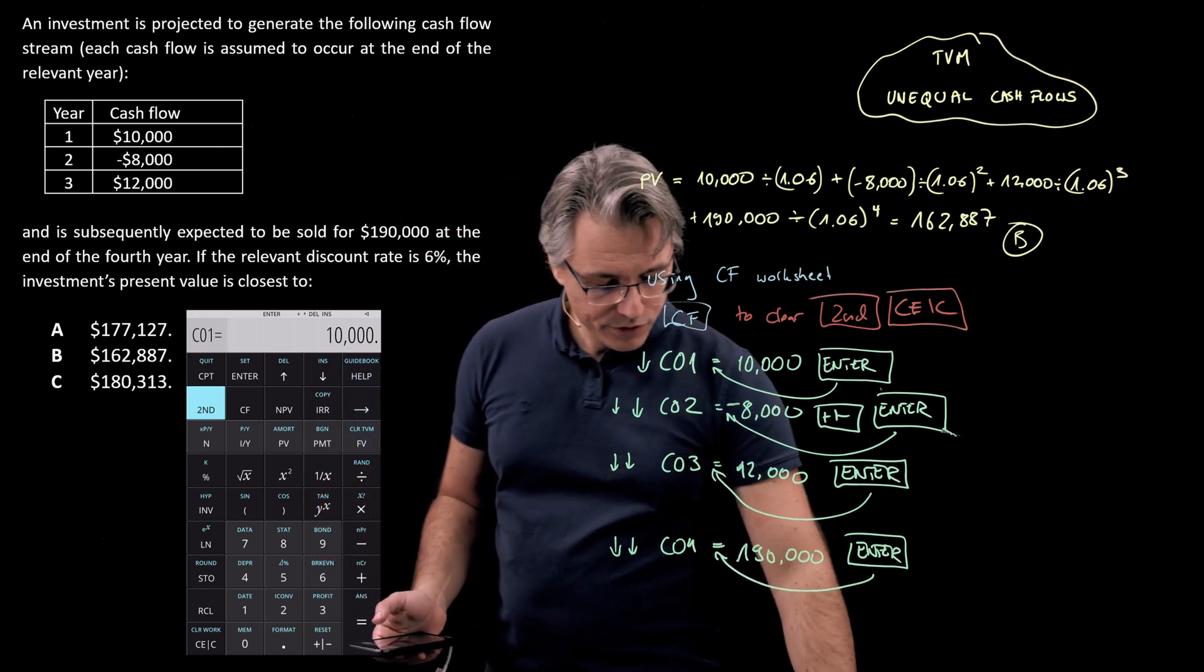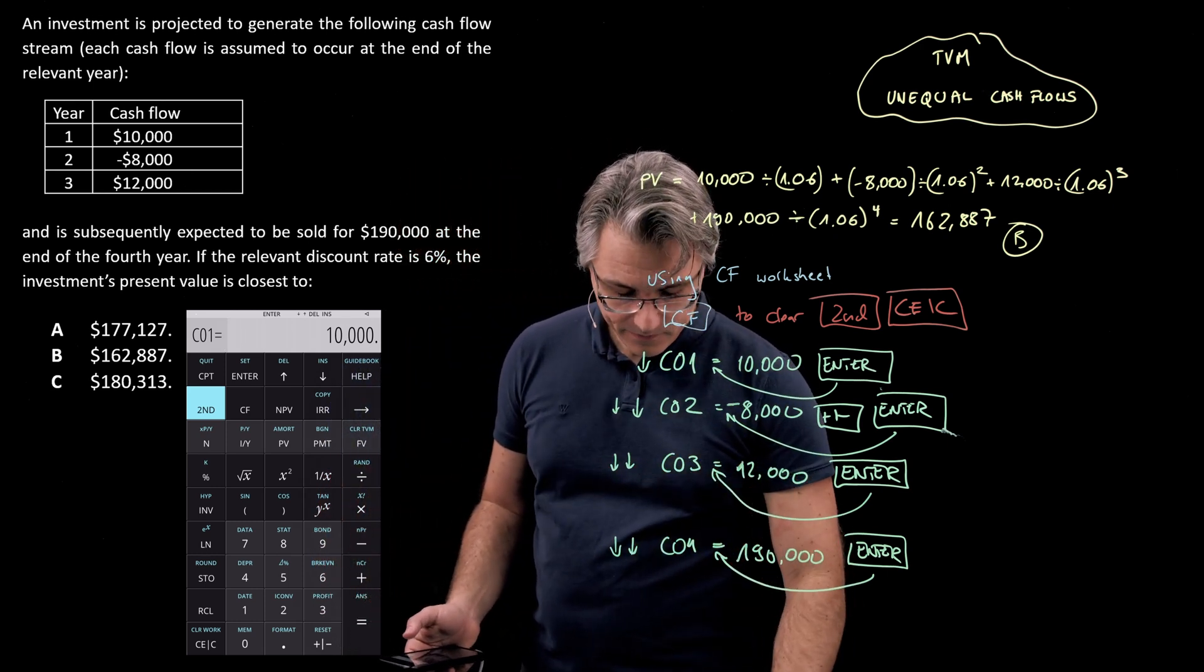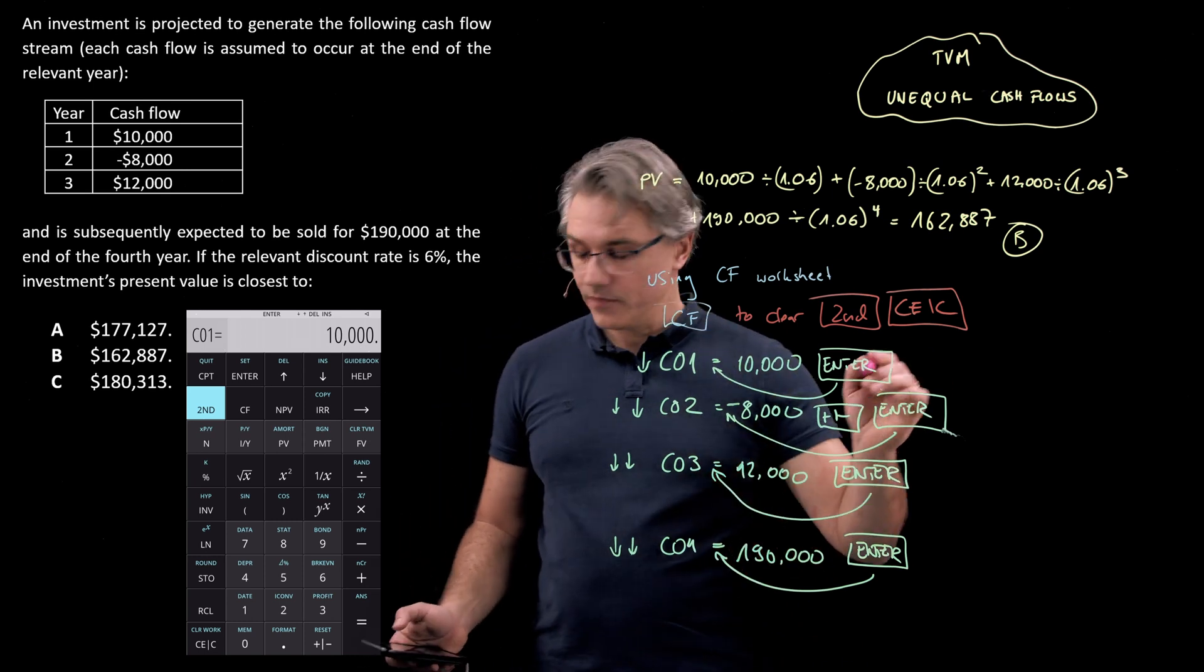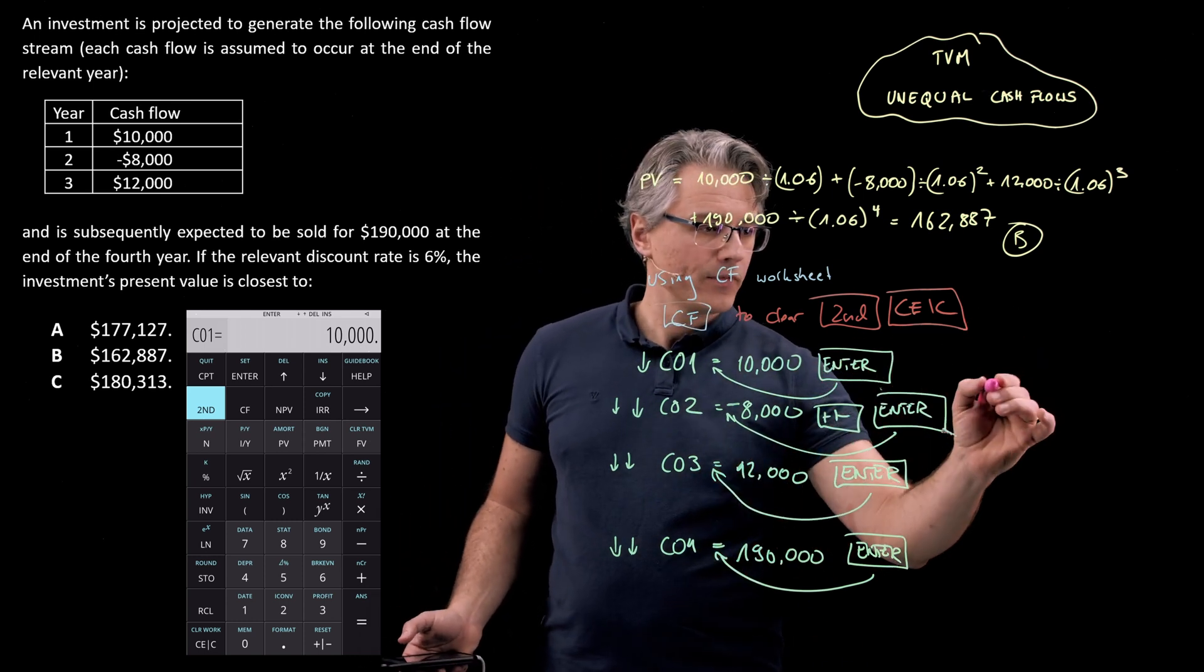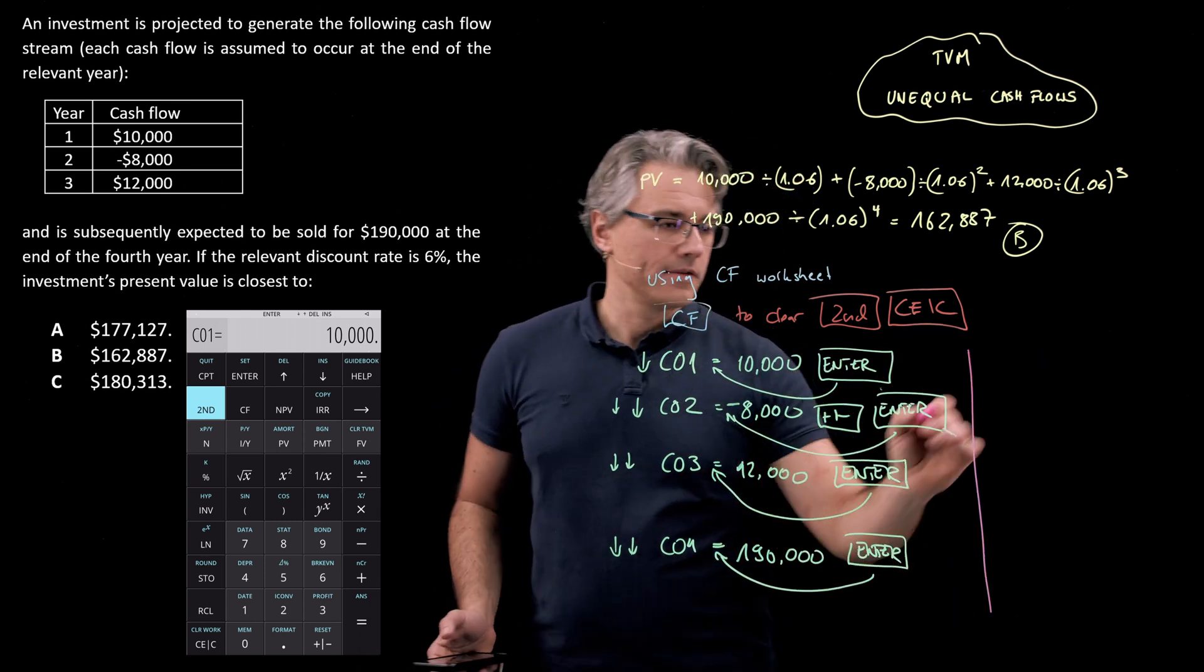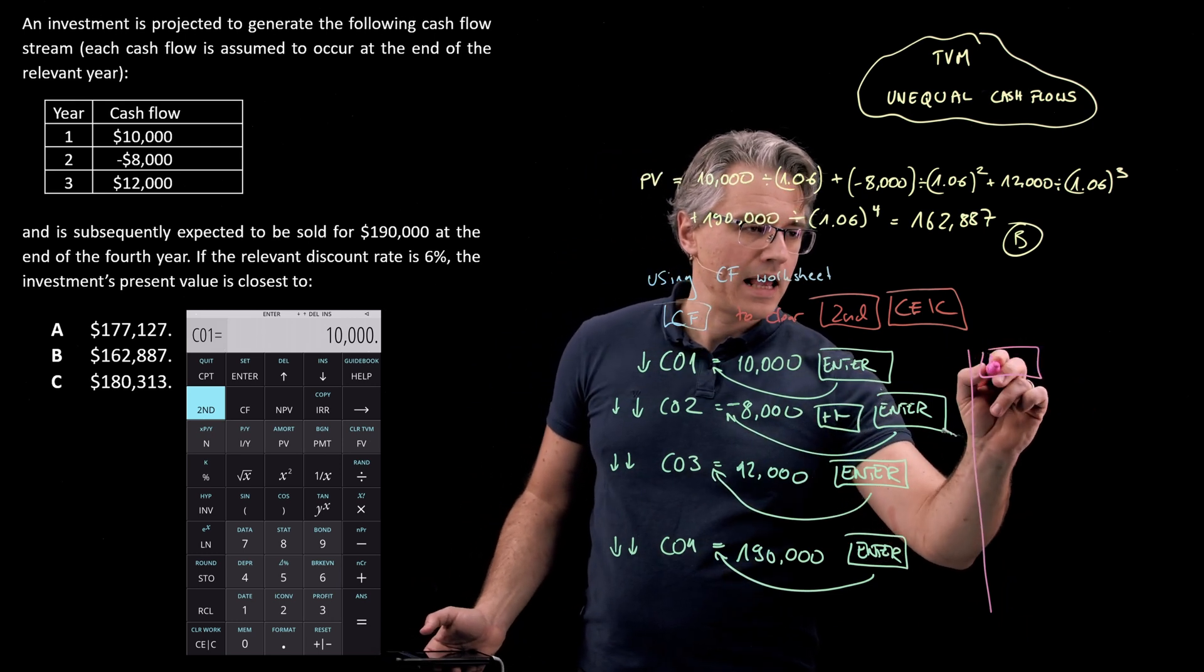The cash flow worksheet is simply a place to store the data, but it doesn't actually perform any computations yet. In order to compute present value, we need to go to the menu which is next door, and that's NPV. So, once you've got these inputs, go and press NPV.